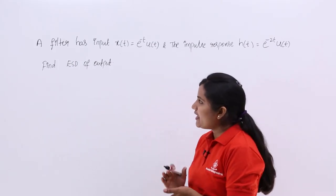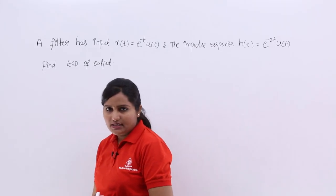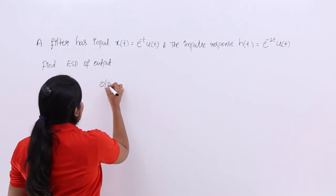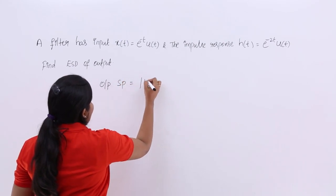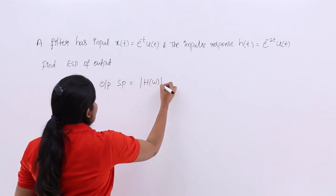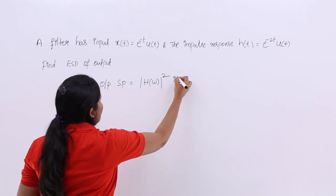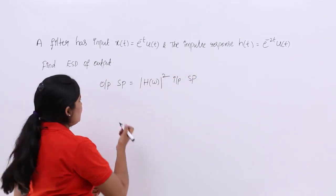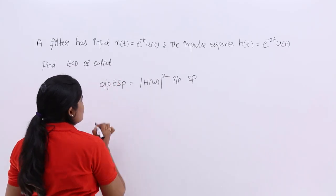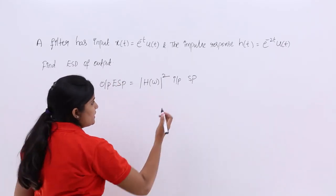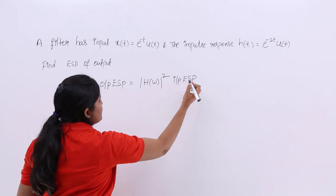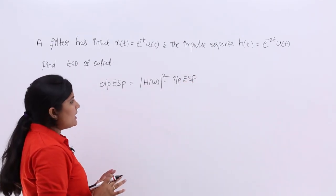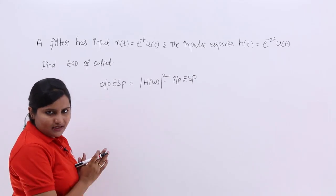In spectral properties, the output spectral density is given by the equation: transfer function magnitude squared multiplied by the input spectral density. If the signals are energy signals, then the output spectral density is called the output ESD, and the input spectral density is the input ESD.